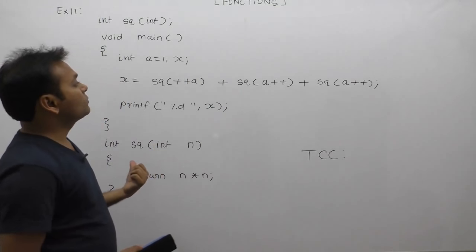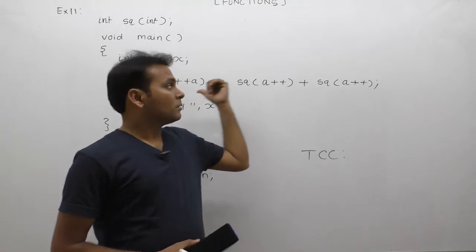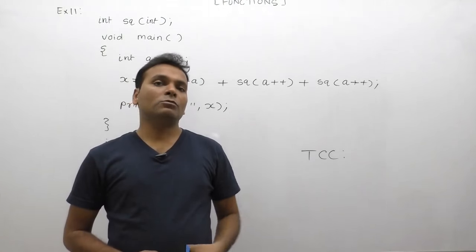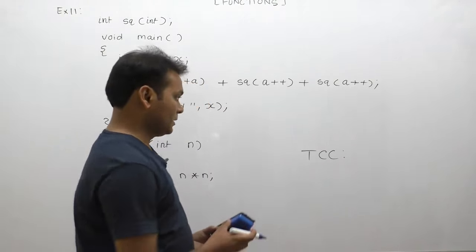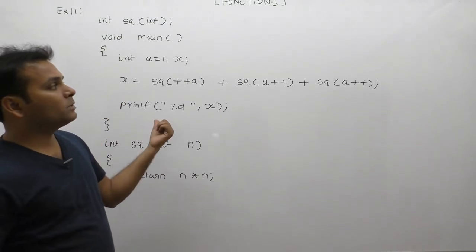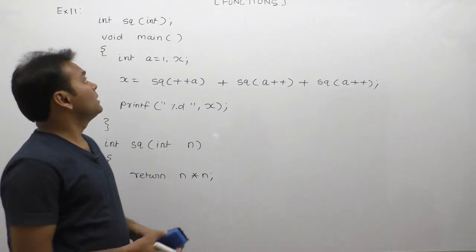But in case of Borland C compiler, within the expression, functions execute from left to right. Generally, this is about the possible behavior that may be expected. But here we are solving this program according to Turbo C compiler, TCC compiler.